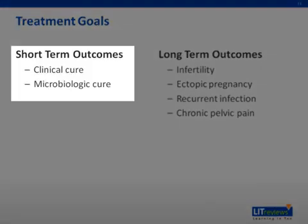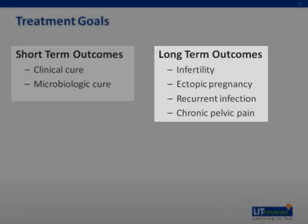In the short term, treatment is aimed at clinical and microbiologic cure. This can be reliably achieved with antibiotic regimens as described on the next few slides. Less is known about the effect of current regimens on long-term outcomes. However, it is thought that by early detection and treatment of PID, it is possible to decrease the rates of infertility, ectopic pregnancy, recurrent infection, and chronic pelvic pain that can be the long-term sequelae.